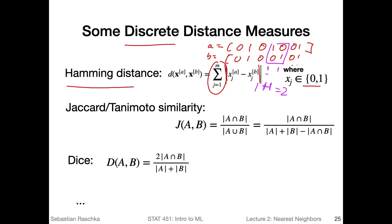Another common similarity measure for discrete feature vectors is the Jaccard similarity, also called the Tanimoto similarity. The Tanimoto similarity term is often used in computational biology, where it was defined by a person named Tanimoto — it refers to the same thing as Jaccard similarity. In data mining, computer science, and machine learning, it is more commonly known as Jaccard similarity.